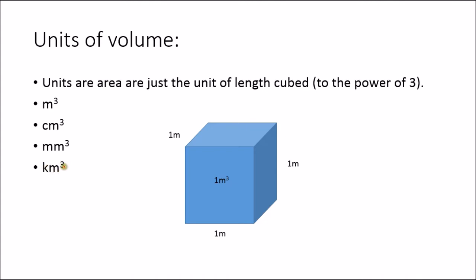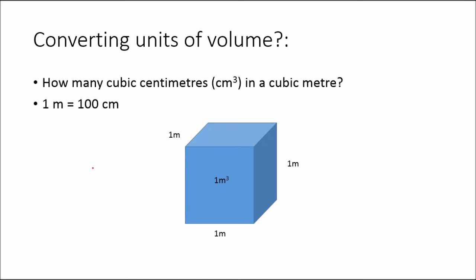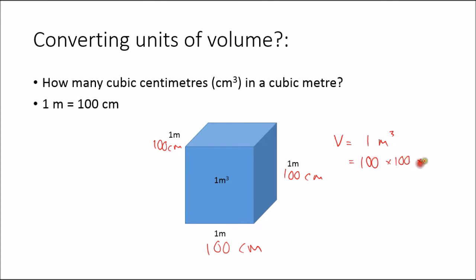You would generally only talk about cubic kilometers if you're discussing the amount of water in the ocean or something like that. When converting units of volume, we think about the fact that volume is length times width times height. So 1 meter is 100 centimeters in each dimension — 100 centimeters by 100 centimeters by 100 centimeters. So 1 meter cubed, which is 1 by 1 by 1, is the same as 100 times 100 times 100 centimeters cubed, which is a million centimeters cubed.